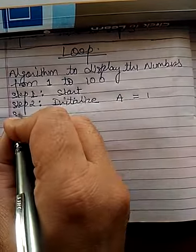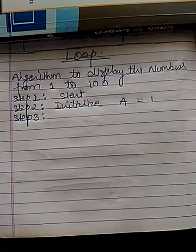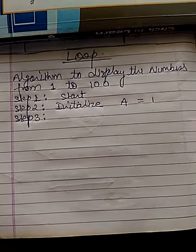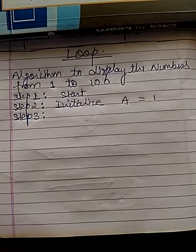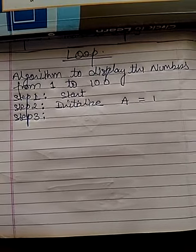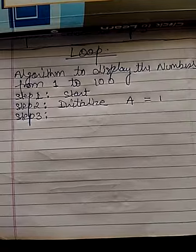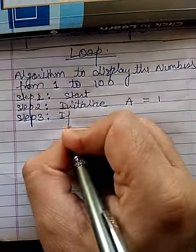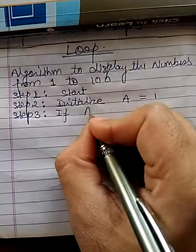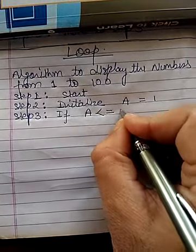Step 3. We have to check the condition whether the value of a has reached 100 or not. If it is reached 100, then it is required to be stopped. So, we are checking if value of a is less than equal to 100.